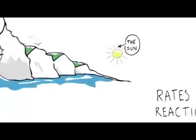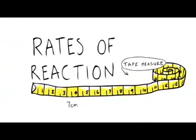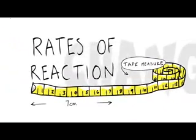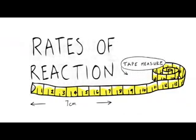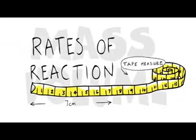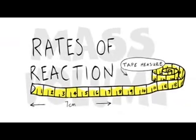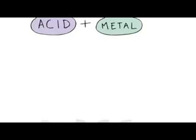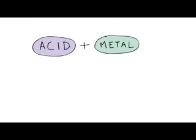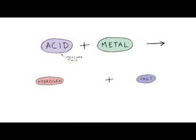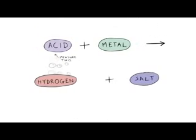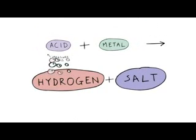So how can we measure the rate of a reaction? We can measure the changes in amounts of the chemicals taking part in the reaction by measuring their mass or volume. So you start off with two different chemicals — an acid and a metal. As a chemical reaction takes place, we can measure the amount of the original chemicals that are left, like how much acid or metal is left.